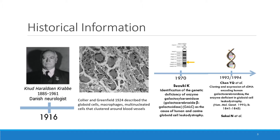The first time this was documented was by Dr. Knud Krabbe, a Danish neurologist who described cases in 1916 of two children that had a sclerosis of the brain that progressed extremely fast into neurodegeneration and died shortly after. The next significant documentation was in 1974 when Collier and Greenfield described the globoid cells seen in macrophages — multinucleated cells clustering around blood vessels — giving the disease the name globoid cell leukodystrophy.